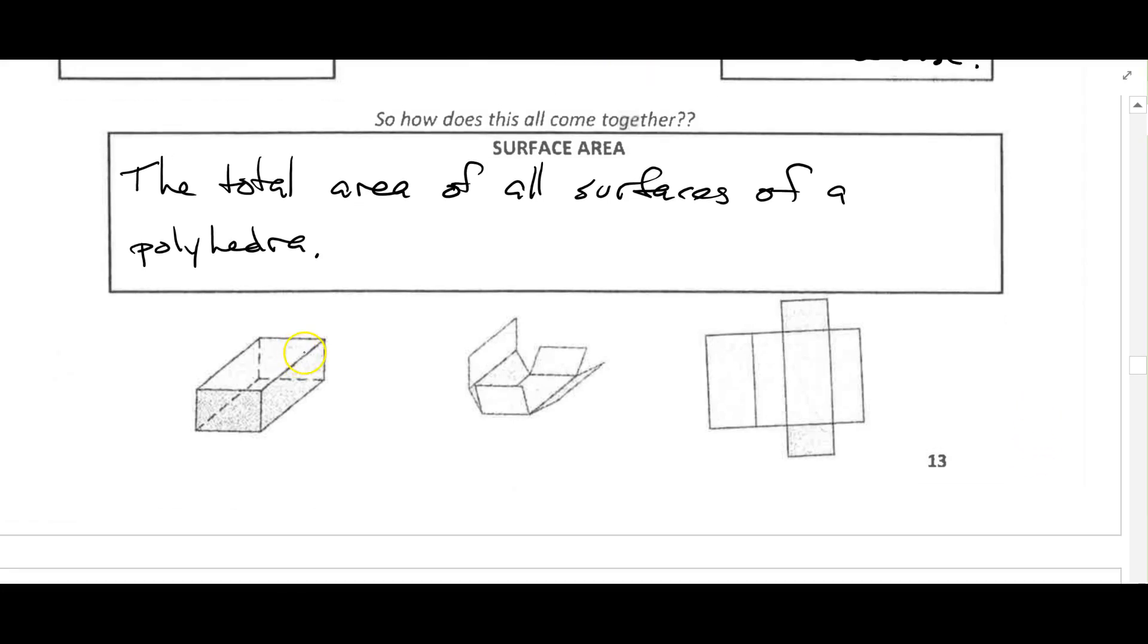This rectangular prism here, we can see if we open it up, we're going to unfold it and we have one, two, three, four, five, six rectangles. If we find the area of all those rectangles and add it up, it would give us the surface area.